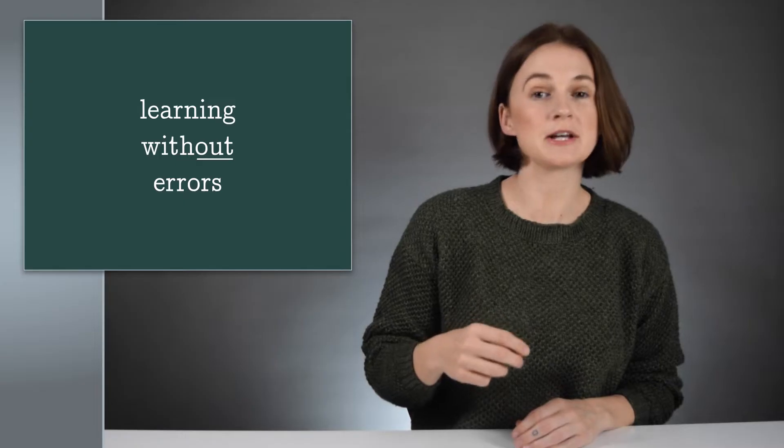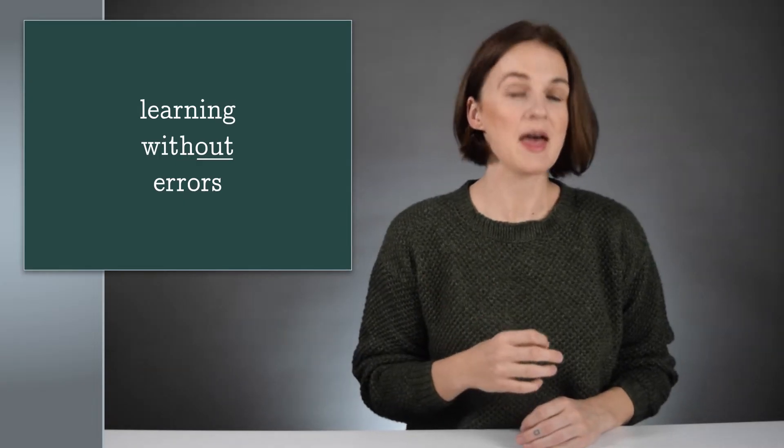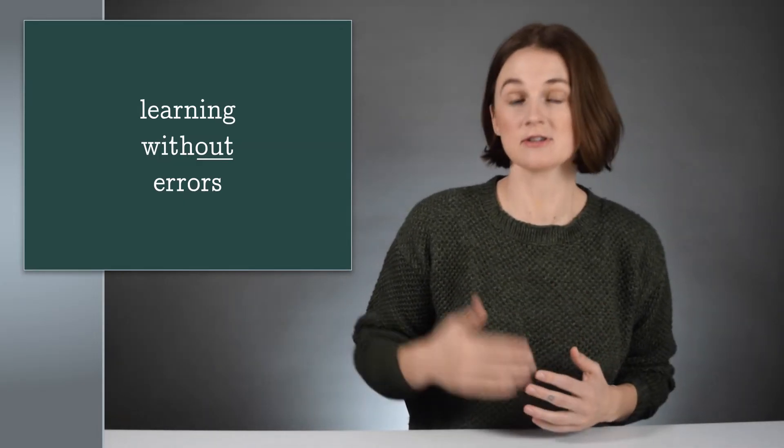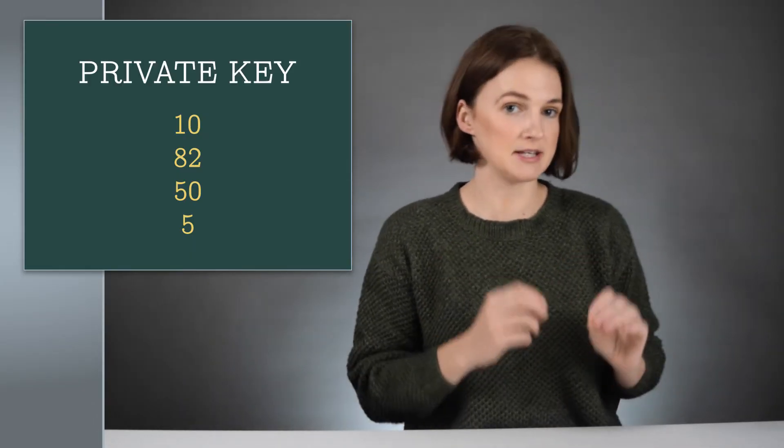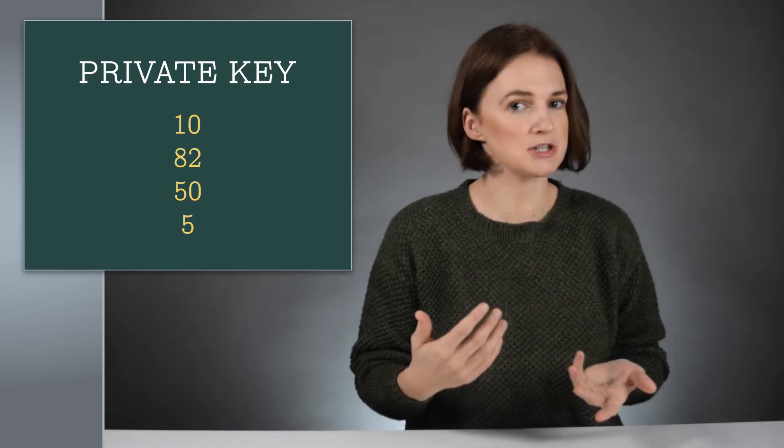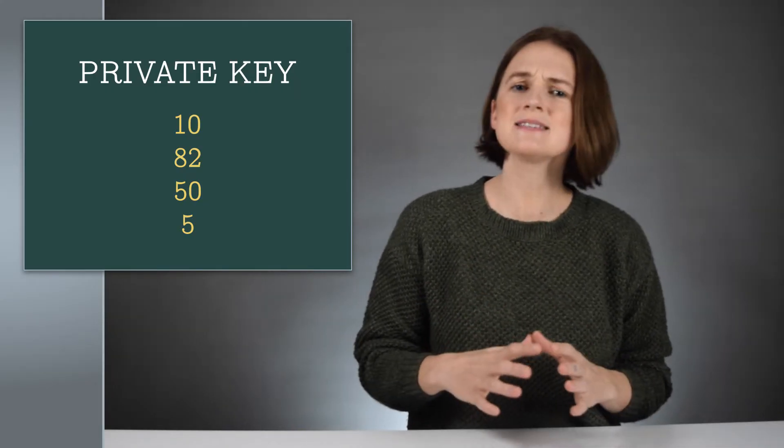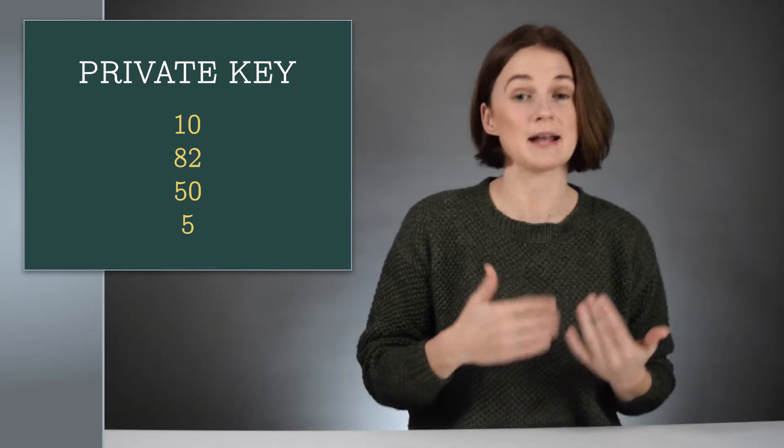First, let's talk about learning without errors. Alice has a secret vector, a list of numbers. That's her private key. Her public key, the information she shares with others, has a slightly odd format at first. It's a bunch of equations.